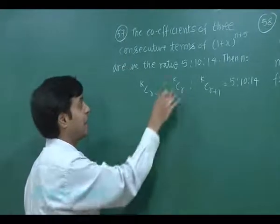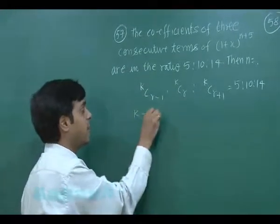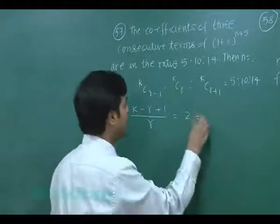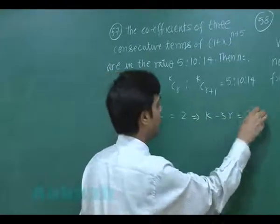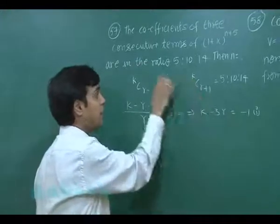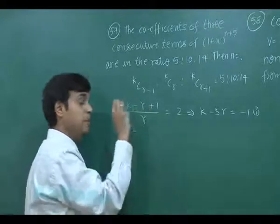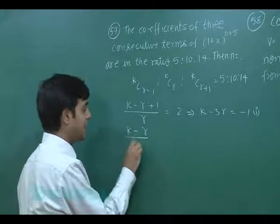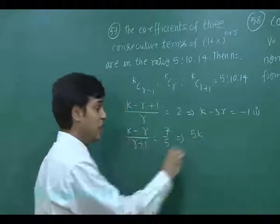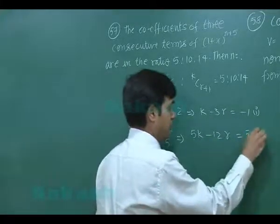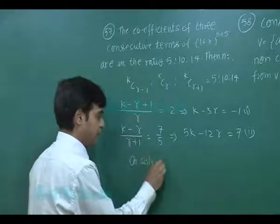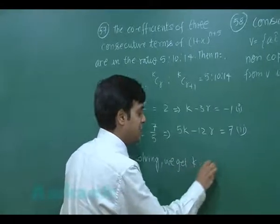When I take first two, I can write it directly: ᵏCᵣ / ᵏCᵣ₋₁ means (k-r+1)/r = 2. Cross multiplying and simplifying, we simply get the equation k - 3r = -1. Let's consider this be equation number 1. Next, ᵏCᵣ₊₁ / ᵏCᵣ is 14/10, that is (k-r)/(r+1) = 7/5, or on simplification it is 5k - 12r = 7.